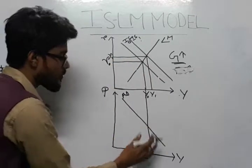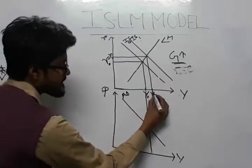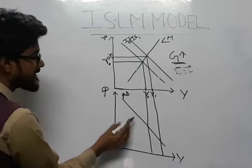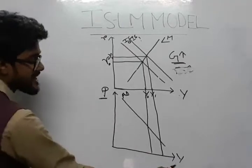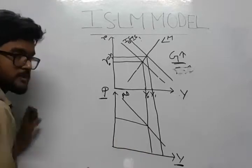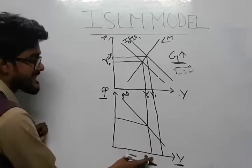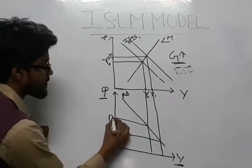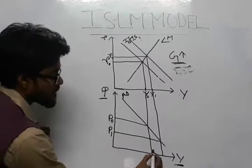Now in the lower panel, if you extend this line, we'll get the negative relationship between price and output, which says at a higher price the producers will be producing less output, and at a lower price producers will be producing more output.